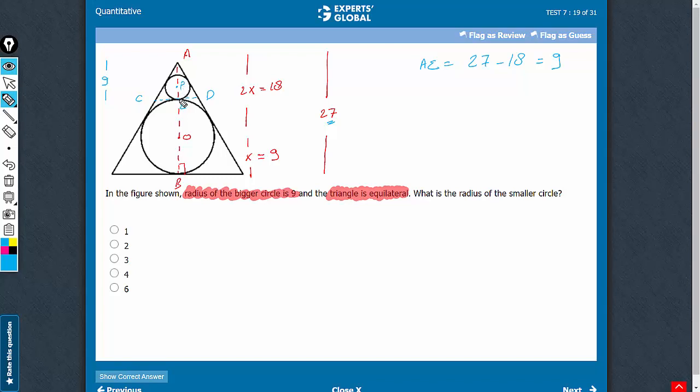If this center here is, let's say, P, then AP plus PE is equal to 9. If AP is, let's say, 2Y, then PE becomes Y. The ratio here is 2 is to 1. This is equal to 9. Y becomes equal to 3.